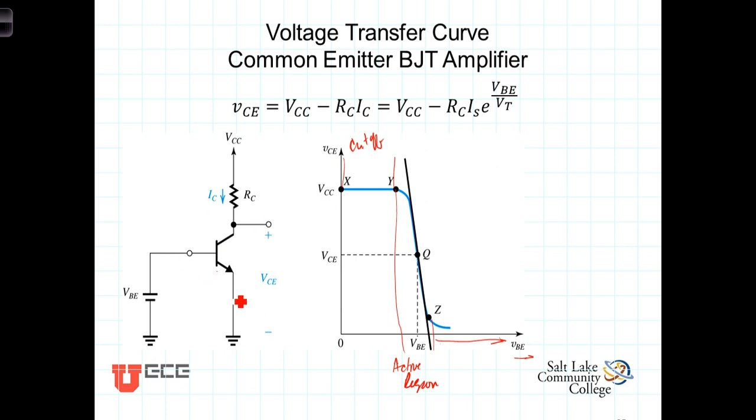So this is the configuration we're going to be using, or at least symbolic of the configuration we're going to use for amplifier gain. And this is the corresponding transfer curve, or the voltage transfer curve for it.